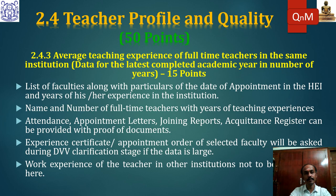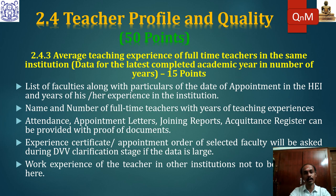Point 2.4.3 covers average teaching experience of full-time teachers in the same institution, for the latest completed academic year only. This is quantitative. Faculty names, department, date of appointment, attendance, acquaintance register, and joining reports must be properly recorded. Work experience from other institutions is not considered here — only experience at the current institution counts.